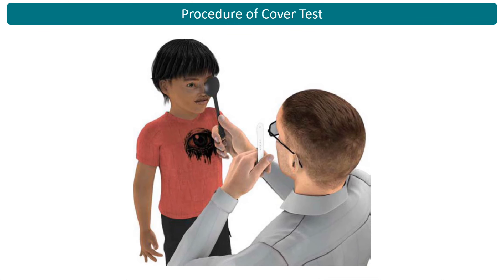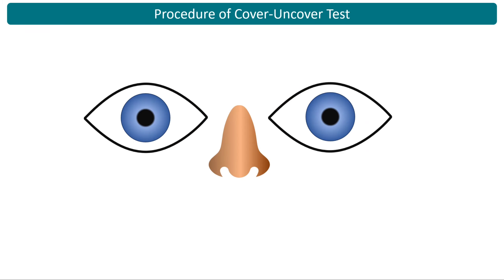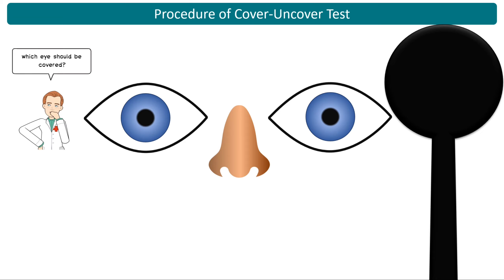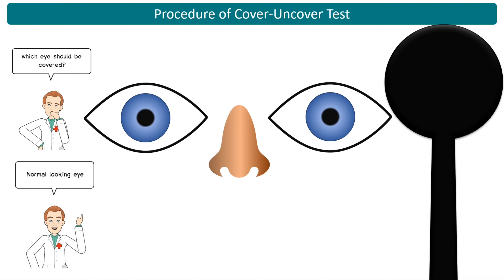For the procedure, the examiner sits directly in front of the patient at a distance of 33 to 40 cm, being careful not to block the patient's view of the fixation target. Explain the test to the patient and instruct them to look at the target and keep it clear at all times during both distance and near testing. To perform the cover-uncover test, take an opaque occluder, ask the patient to fixate on the target, then cover one eye — covering the normal-looking eye if a squint is already visible, otherwise cover either eye — and observe the uncovered eye for any movement.